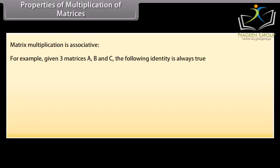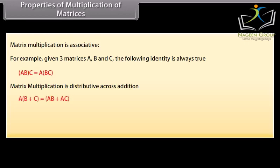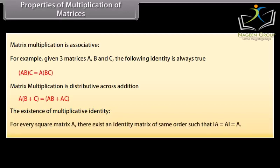Properties of multiplication of matrices. Matrix multiplication is associative: for three matrices A, B, and C, the identity (AB)C equals A(BC) is always true. Matrix multiplication is distributive across addition: A(B plus C) equals AB plus AC. The existence of multiplicative identity: for every square matrix A, there exists an identity matrix I of the same order such that IA equals AI equals A.